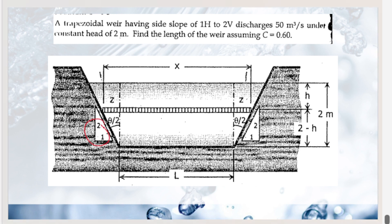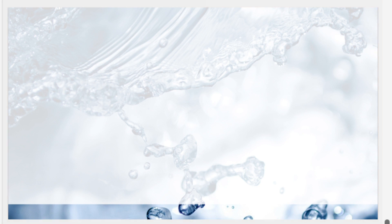Using dQ = C × dA × √(2gh), where dA = x × dh and x = L + 2z. From the side slope 1:2, z = (1/2)(2 − h), so x = L + 2 × (1/2)(2 − h) = L + 2 − h. Therefore dA = (L + 2 − h) dh. Substituting: dQ = C√(2g) × (L + 2 − h) × √h × dh. Integrating from 0 to 2: Q = C√(2g) × ∫₀² (Lh^(1/2) + 2h^(1/2) − h^(3/2)) dh.